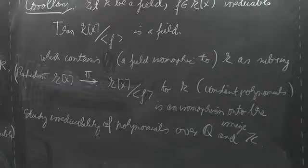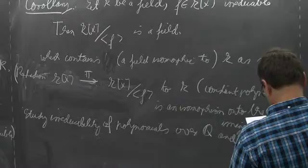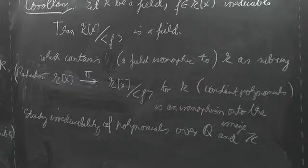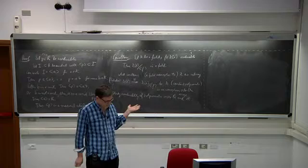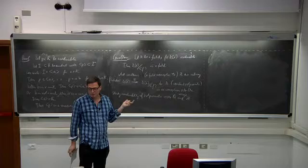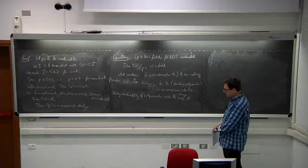The first result is due to Gauss. We have first a lemma, and before that a definition. For polynomials in Z[x], if you take an irreducible polynomial and multiply by an integer which is not a unit, it will not be irreducible anymore. So we first look at primitive polynomials — polynomials whose coefficients have no common divisor.